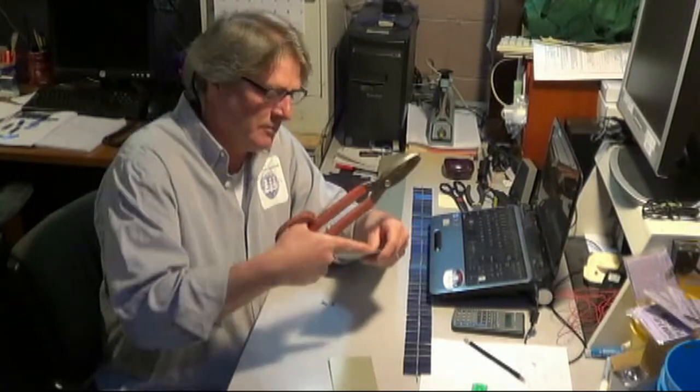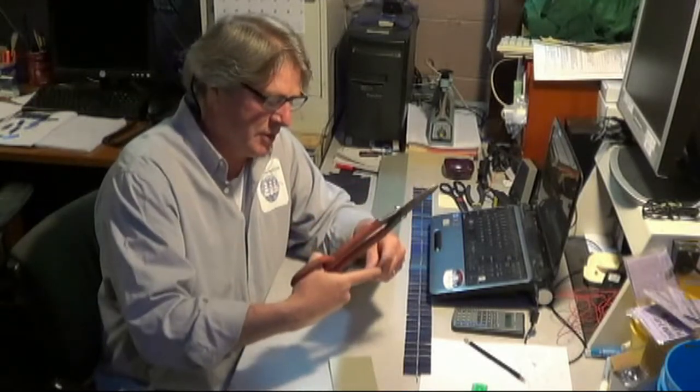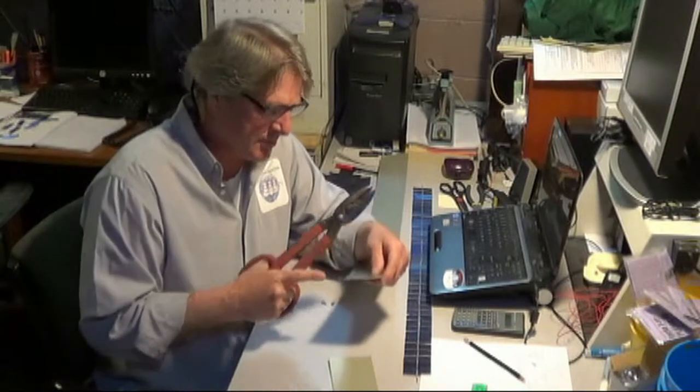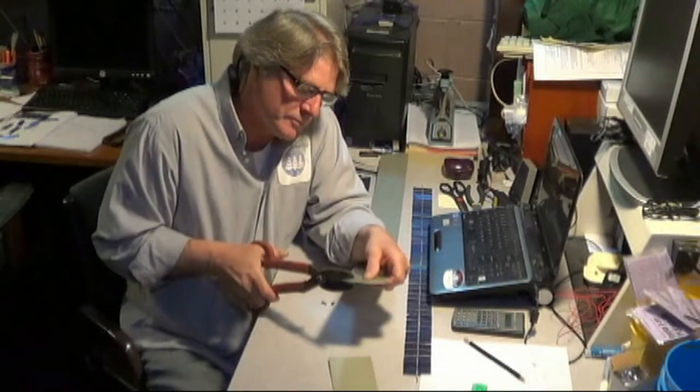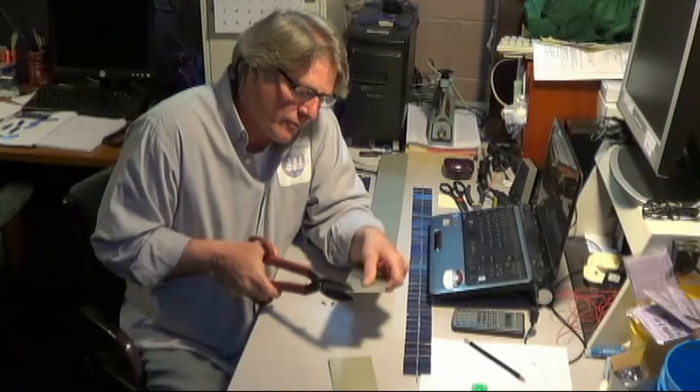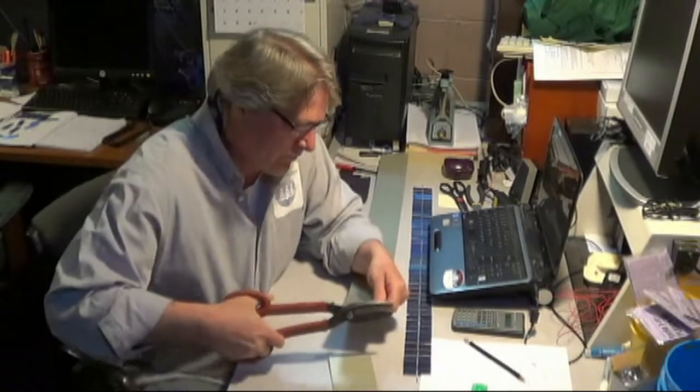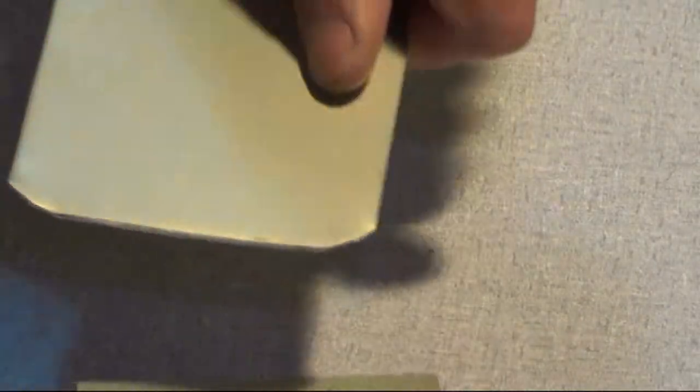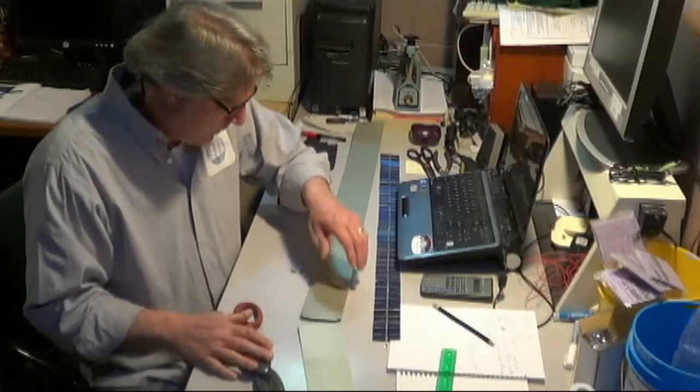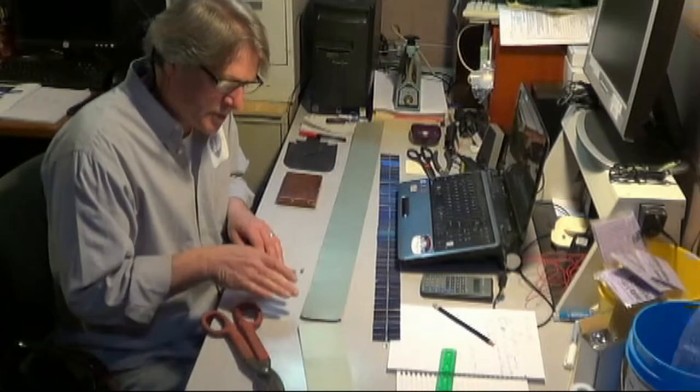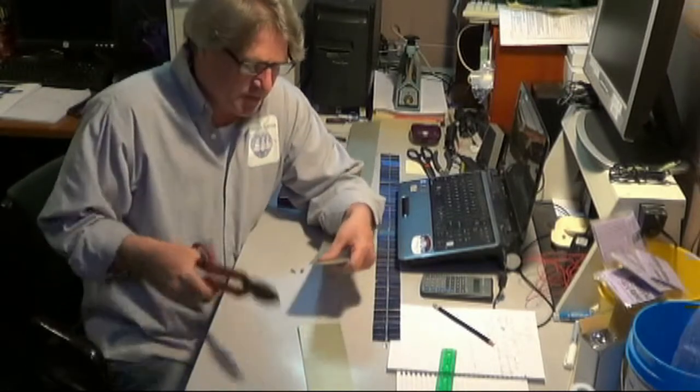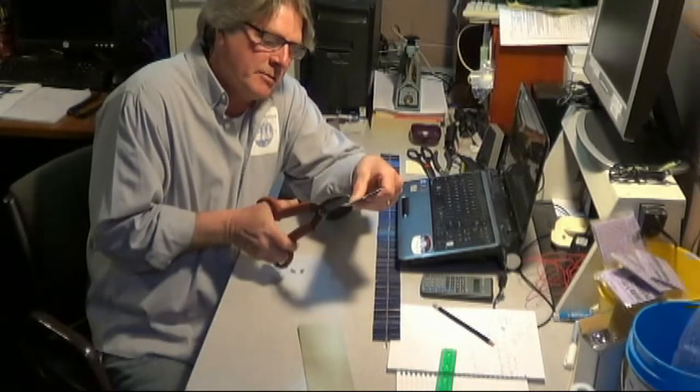We're going to go ahead and round the corners of this aluminum, just dress it up a little bit and also makes it so it's not quite so sharp. Once you have those corners cut off, I'm going to cut this one just a little bit more. It needs a little bit more roundness to it.